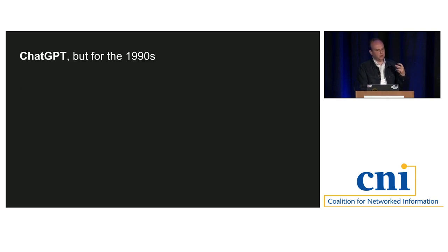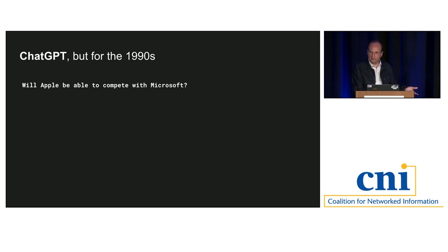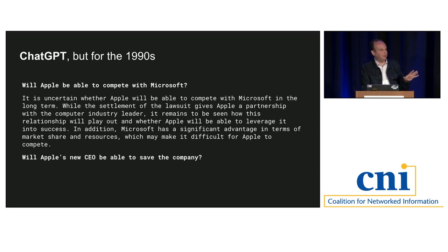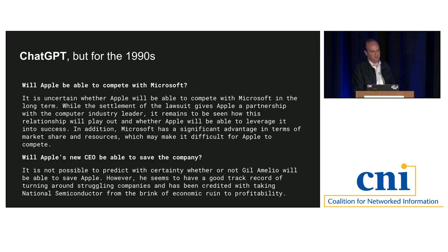At Stanford we have a fascinating collection of Silicon Valley history — about 34,000 documents with 15 million words, all written between 1987 and 1997. I wanted to have a conversation with those documents, not the base model, but with the archive itself — essentially a ChatGPT frozen in time between 1987 and 1997. The best question: 'Will Apple be able to compete with Microsoft?' The answer is that it's not clear in 1997 — Microsoft has significant advantages in market share and resources. Then asking about Apple's new CEO, the model says Gil Amelio did great work at National Semiconductor.